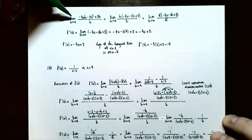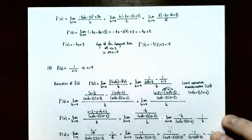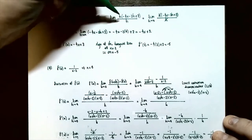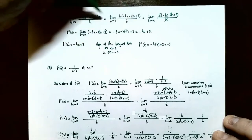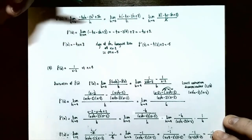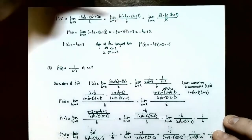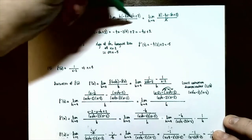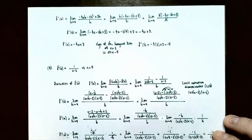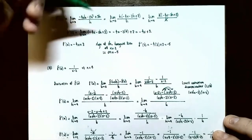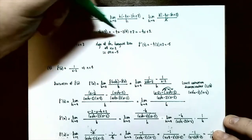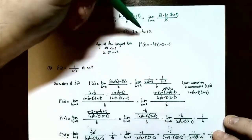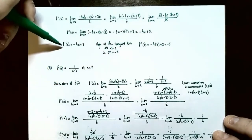All the remaining terms have h in common, so factor out h as the GCF. That gives h times the quantity negative 4x minus 2h plus 3 in the numerator, over h in the denominator. Cancel the h divided by h, leaving the limit as h approaches 0 of negative 4x minus 2h plus 3. Now substitute h equals 0: negative 2 times 0 drops out, leaving f prime of x equals negative 4x plus 3.